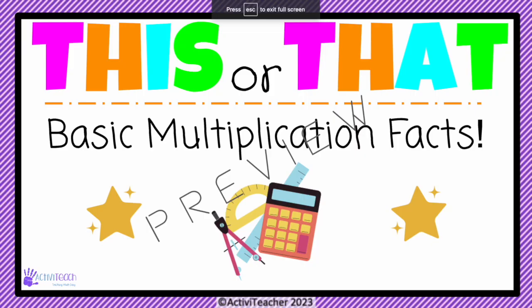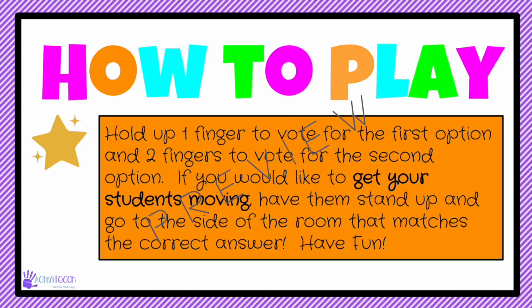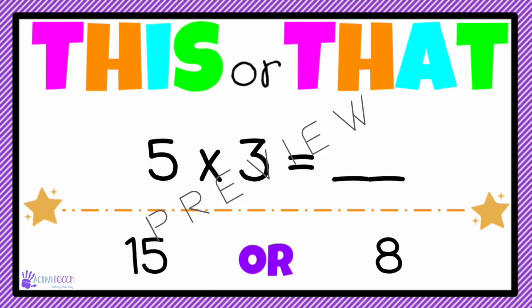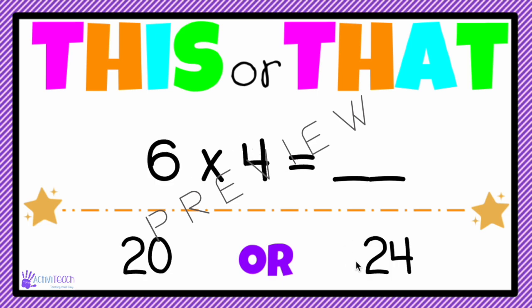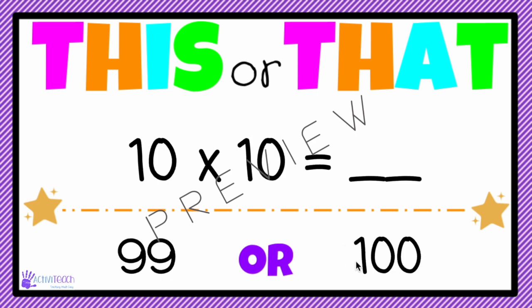I have two more activities. The first is a 'This or That' basic multiplication facts game. Students will stand up and go to the side of the room that matches the correct answer. For example, five times three equals fifteen, so students go to that side of the classroom. Zero times nine equals zero, so they go to the other side. It's a fun activity that just gets students out of their seats.